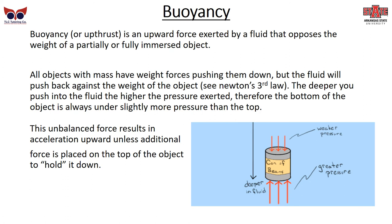Buoyancy is a special type of force, sometimes called upthrust. When you try to push something underwater it keeps trying to bounce back up. All objects with mass have weight force — gravity pushing down — but the fluid pushes back against the weight of the object. The deeper you push into the fluid, the higher the pressure, because there's more fluid on top. The bottom of the object is always under slightly more pressure than the top, creating a tendency to push it up, so you have to push down harder to keep it underwater. Otherwise, it bobs on the surface.